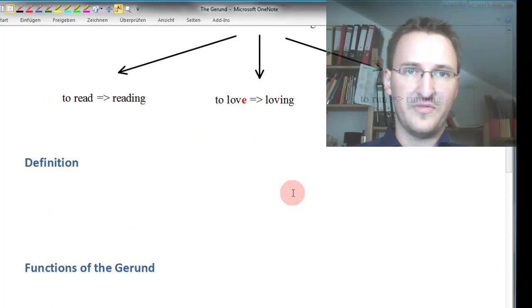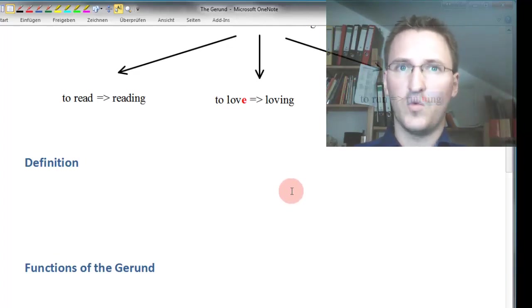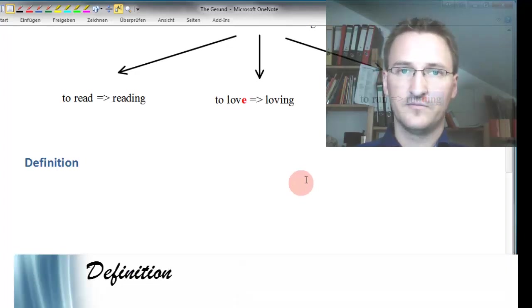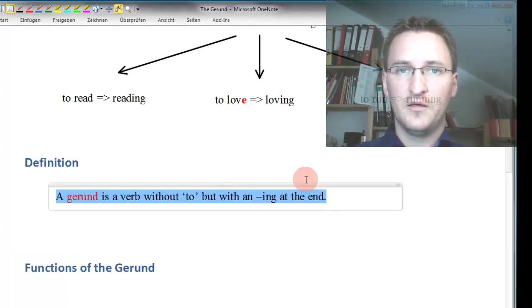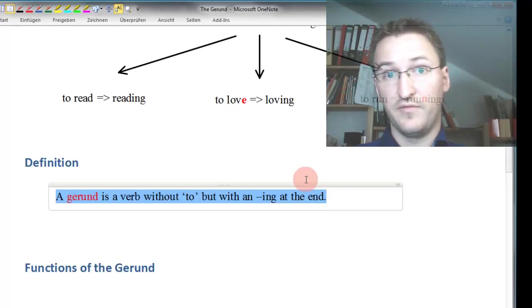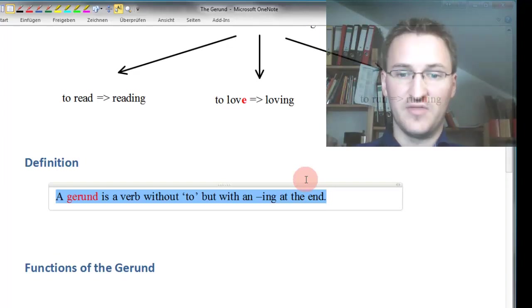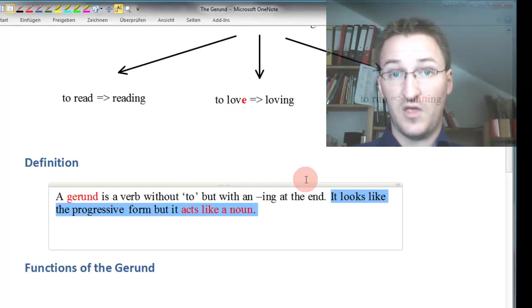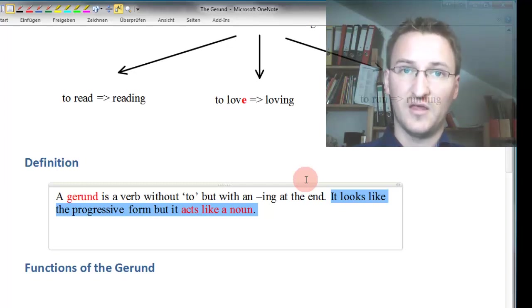Now, we know that there are different ING forms. We know how these ING forms are built. But still, we don't quite know what the gerund is and what it's supposed to do, right? Let's find out. First of all, the gerund is still a verb. It does not have the TO, but it has an ING at the end. It looks like the progressive form, but it acts as a noun. And this is pretty much what it comes down to. The gerund acts as a noun. This is the important thing for us.